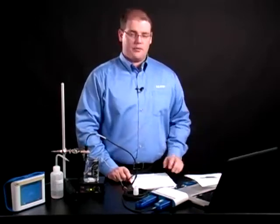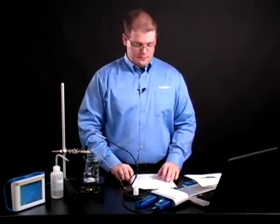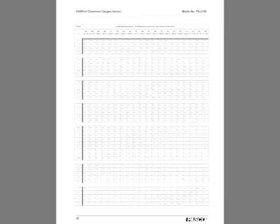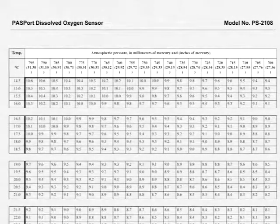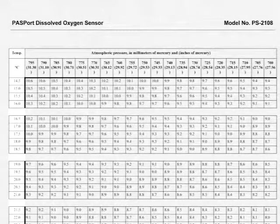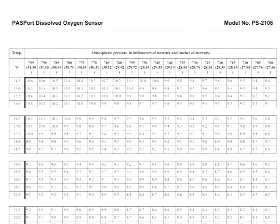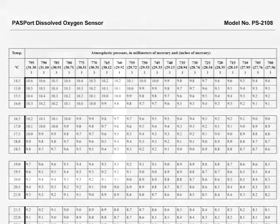I'm going to use other passport sensors to find this information. In Appendix C, you'll notice the atmospheric pressure is across the top of the table, and the temperature in degrees Celsius is along the left-hand side. Cross-reference those values to find the saturation value in milligrams per liter. For my sample, it's 9.1 milligrams per liter.